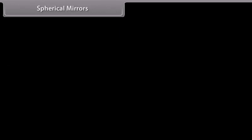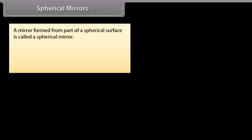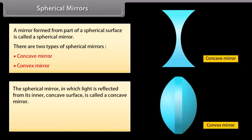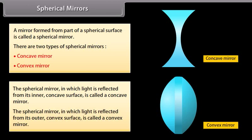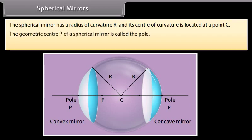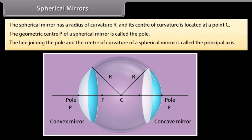A mirror formed from part of a spherical surface is called a spherical mirror. There are two types: a concave mirror, in which light is reflected from its inner concave surface, and a convex mirror, in which light is reflected from its outer convex surface. The spherical mirror has a radius of curvature R, and its center of curvature is at point C. The geometric center P is called the pole, and the line joining the pole and the center of curvature is called the principal axis.